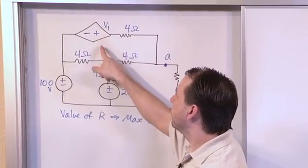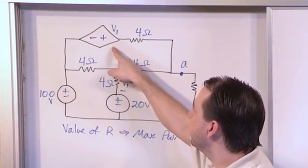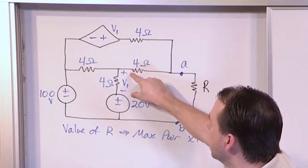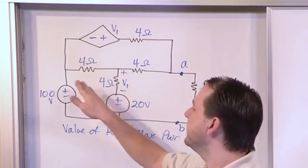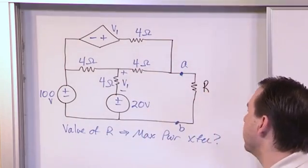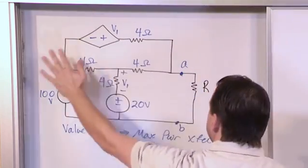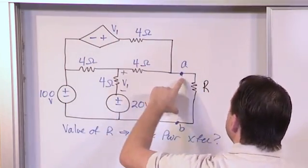Here we have a voltage controlled voltage source. The value of this source is equal to the value that lies across that 4 ohm resistor down there. So we have a mixture of independent sources and also dependent source. And this entire circuit here, whatever it's doing, is driving this load.